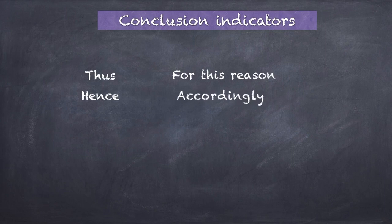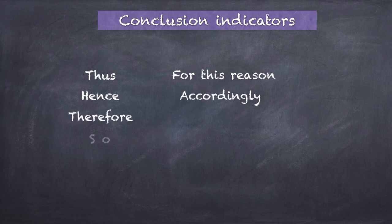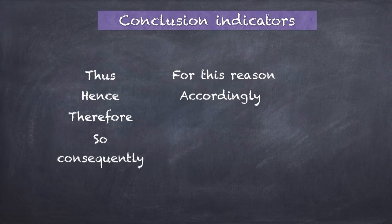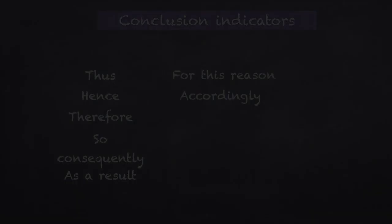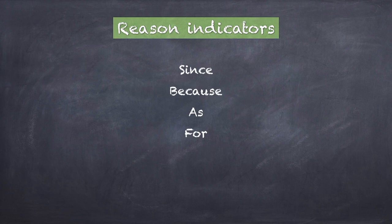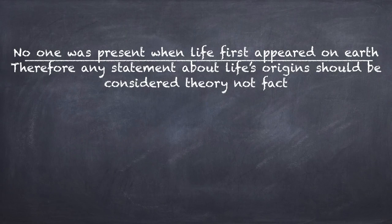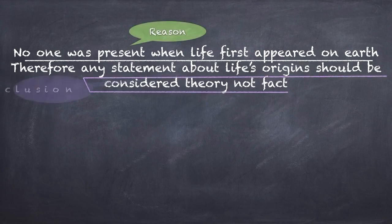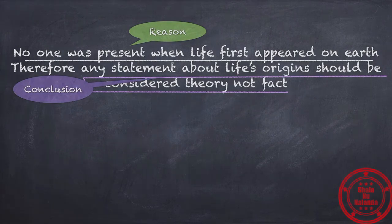There is some help available. Conjunctions and keywords come in handy because certain words indicate that whatever follows is a conclusion — words like 'thus,' 'hence,' 'therefore,' 'for this reason,' 'consequently.' Similarly, there are reason indicators — words like 'since,' 'because,' 'as,' 'for.' If you find these words before a sentence, whatever follows is the reason or support part of the argument. You will see words like 'since' and 'therefore' in the examples we just did.